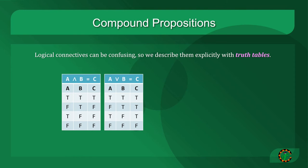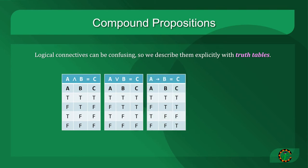For implication, you'll notice that if the premise is true and the consequence is true, then the compound proposition is true. But also, any time the premise is false, whether or not the consequence is false, the compound proposition is true. The only time when an implication is false is when you break the promise, when A is true but B is not.